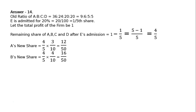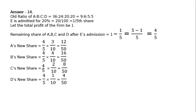C's new share is equal to 4 upon 5 multiplied by 2 upon 10, that is equal to 8 upon 50. D's new share is equal to 4 upon 5 multiplied by 1 upon 10, that is 4 upon 50. E's new share is equal to 1 upon 5 multiplied by 10 upon 10, that is 10 upon 50. They are sharing not in the old share, but in the share they will be sharing in future, that is 4:3:2:1 among A, B, C, D only.